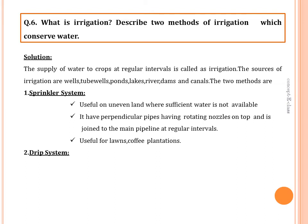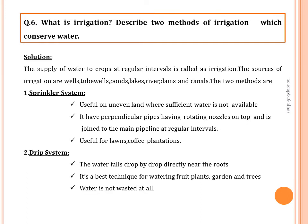The sprinkler system is more useful on uneven land where water is insufficient. It has perpendicular pipes with rotating nozzles on top, joined to the main pipeline at regular intervals, giving the effect of rain. It is useful for lawns and coffee plantations. In the drip system, water falls drop by drop directly near the roots — best for watering fruit plants, gardens, and trees, and water is not wasted at all.